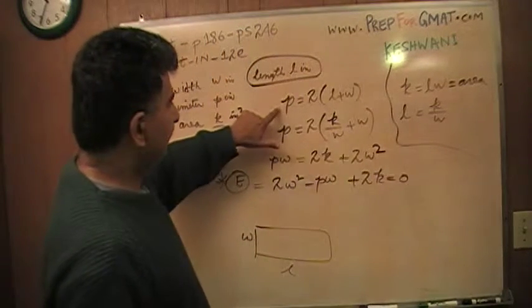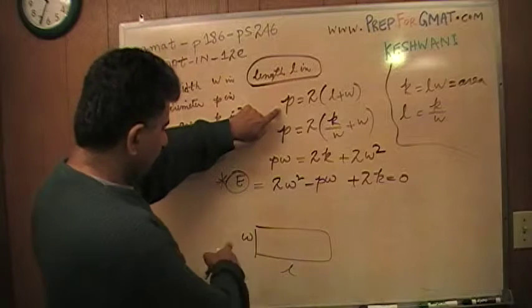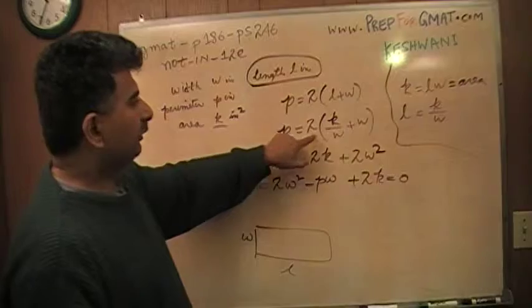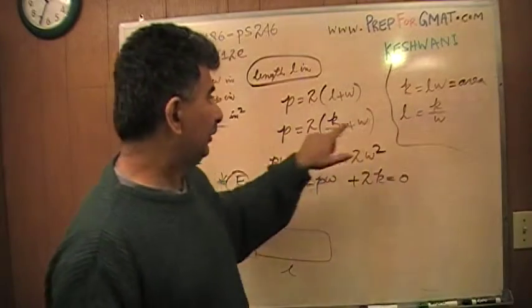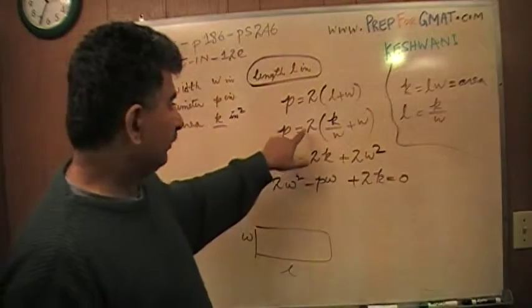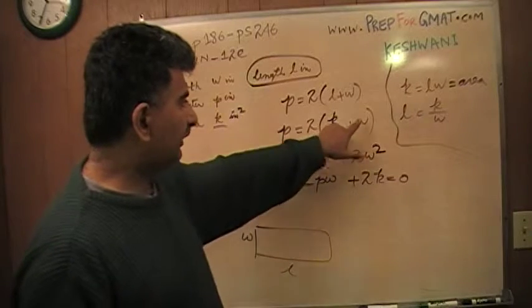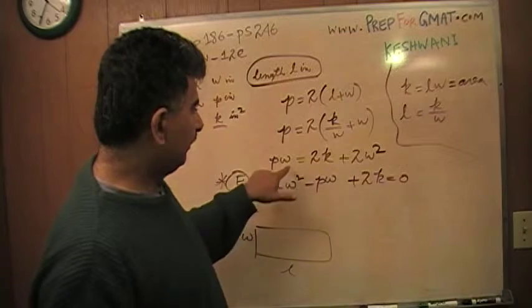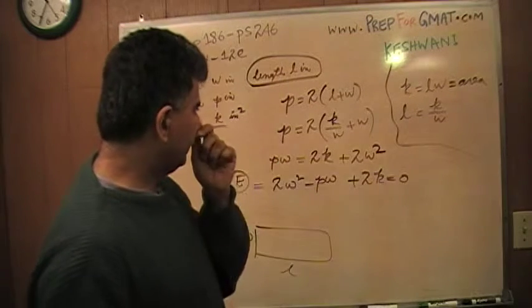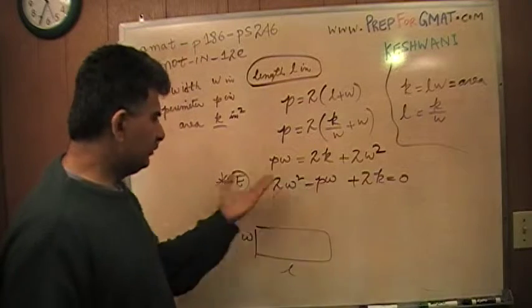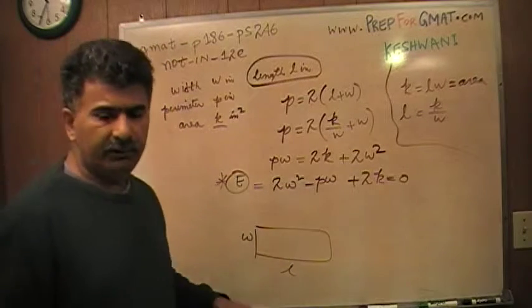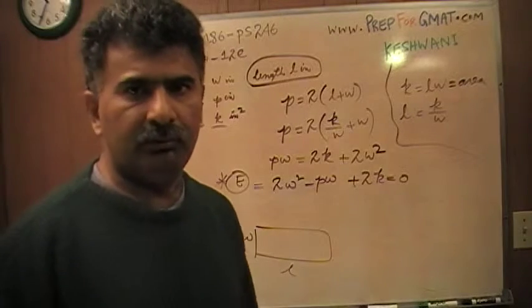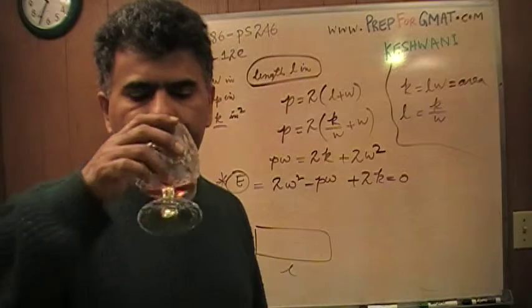So P equals, P is the perimeter, which is simply 2 times W and 2 times L, which is 2 times L plus W. So then I took the value of L from this equation, K over W, substituted it back in here, so we get 2 times K over W plus W. Multiply the whole equation by W, PW equals 2K plus 2W squared, and you just write them in the form that you see in one of the answer choices. You have to keep manipulating it until you find something that looks close to the way the answers are presented.